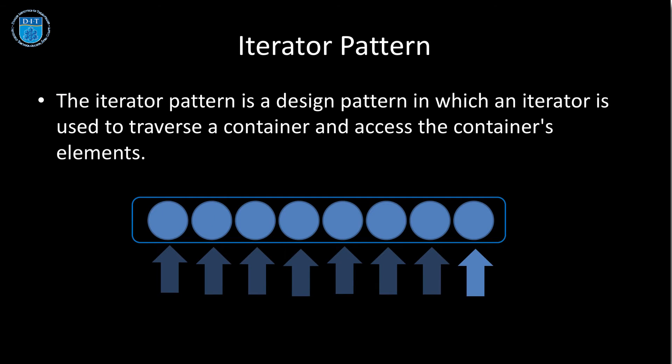The first one is the iterator pattern. The iterator pattern is used when we want to go across a container of values. They could be objects, they could be numbers, they could be linked lists, they could be anything. So if we think of an array as a simple example, we want to visit each element of the array.